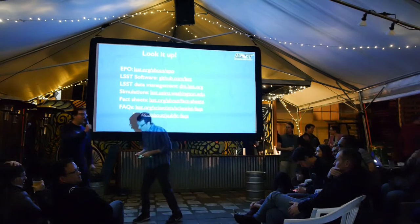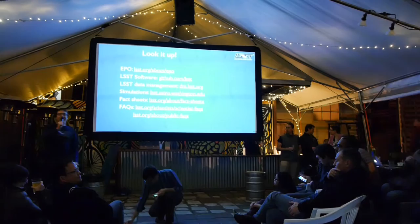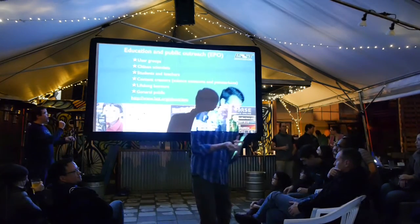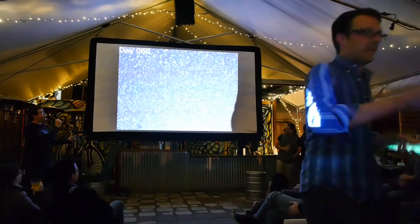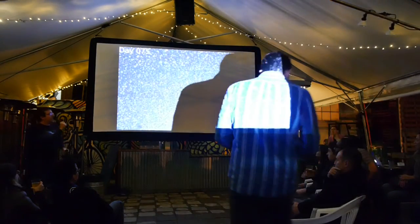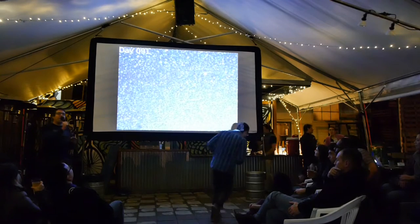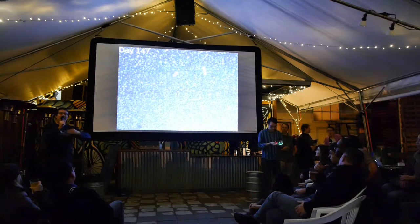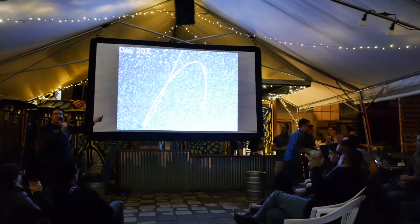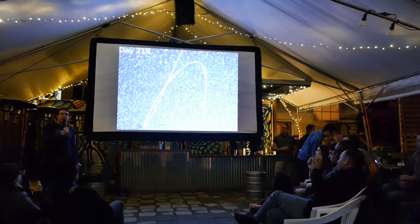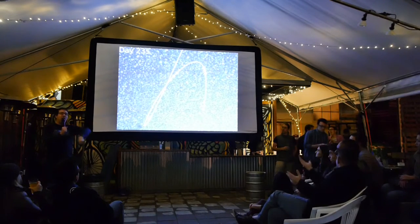The question is about that slide showing the asteroid looping. That's a combination of the asteroid moving through space and the fact that the Earth is also moving through space. Because the Earth moves, you get a parallax effect where the asteroid appears to be moving relative to the background stars. Over the course of a year, you get these loops.